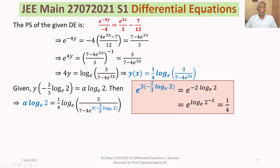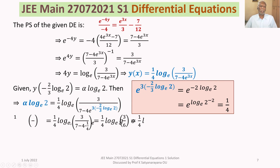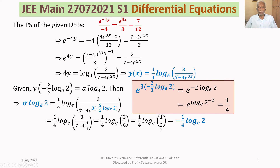So 4 · (1/4) = 1, giving us y = (1/4) · ln(3 / (7 − 4 · (1/4))) = (1/4) · ln(3 / (7 − 1)) = (1/4) · ln(3/6) = (1/4) · ln(1/2). Since ln(1/2) = −ln 2, we get y = −(1/4) · ln 2.